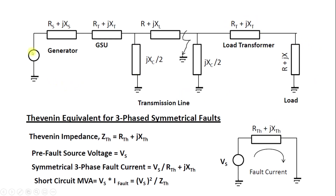Everything in this system has been converted into its respective R and X values. When we calculate the short circuit, we simply calculate the Thevenin impedance behind the short circuit.